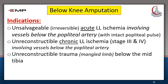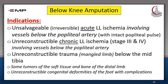Unreconstructable trauma — the mangled limb — is another indication for below-knee amputation if the destruction is below the mid-tibia. Below-knee amputation is also done for some tumors of the soft tissue and bone of the distal limb, and for unreconstructable congenital deformities of the foot with complications.